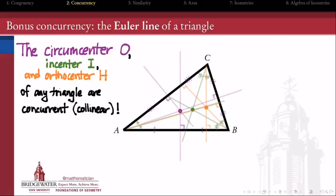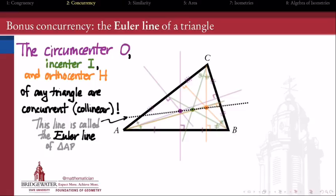So the circumcenter, incenter, and orthocenter, I can draw one line that passes through all three of those center concurrency points related to a triangle. That line that I can draw through these three points is called the Euler line of the triangle ABC.